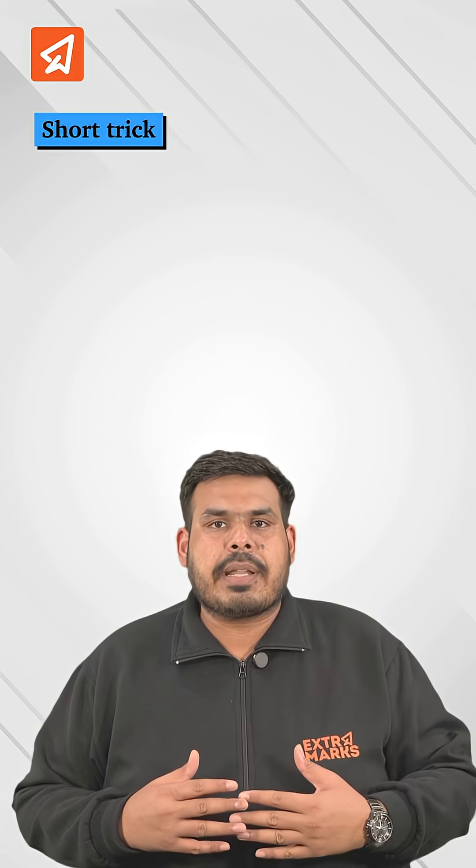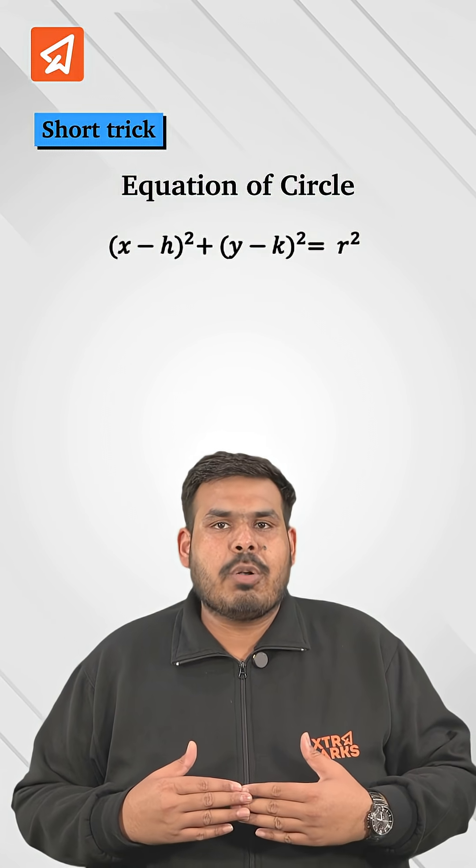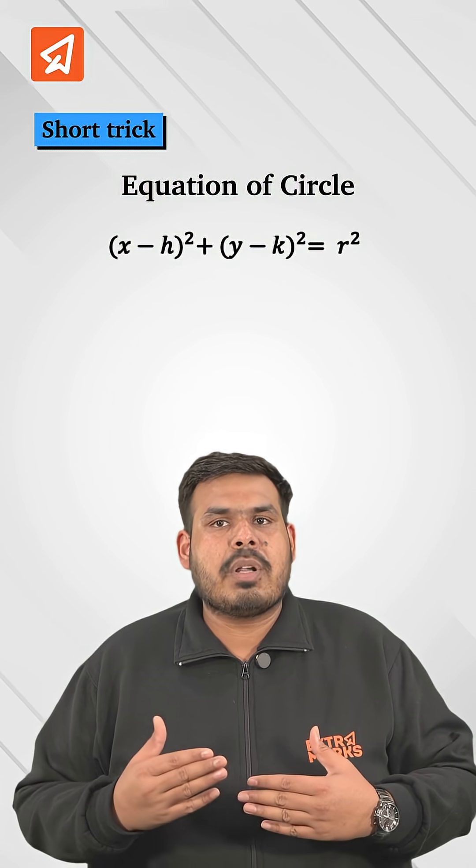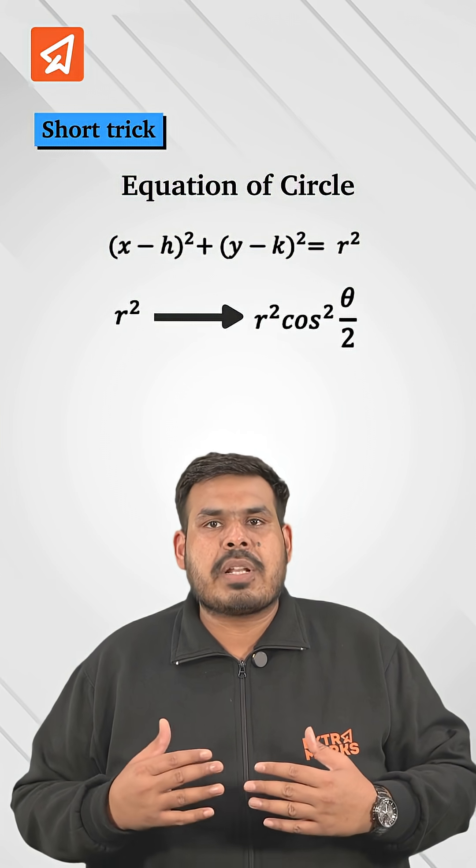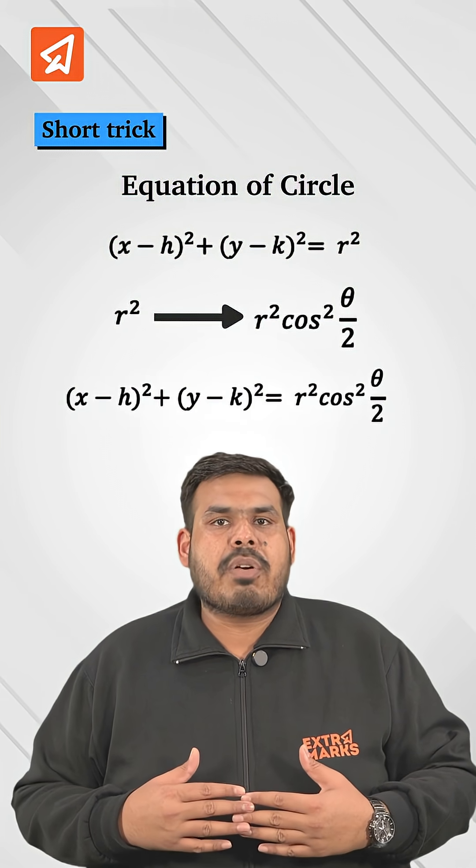Equation of this traced path can be found out by using a simple trick. Given an equation of circle as (x - h)² + (y - k)² = R², and by just replacing R² with R²cos²(theta/2), we can find locus of midpoint M.